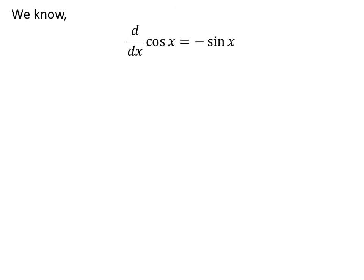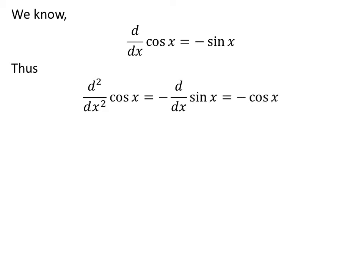We know the derivative of cosine of x is equal to minus sine of x. The second derivative of cosine of x is equal to the derivative of minus sine of x, which is equal to minus cosine of x. Similarly, the third derivative of cosine of x is equal to sine of x, and so on for higher derivatives of cosine of x.